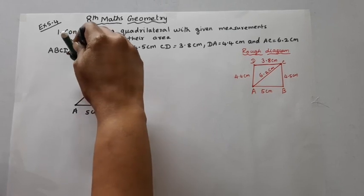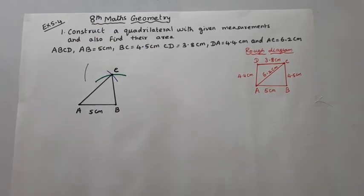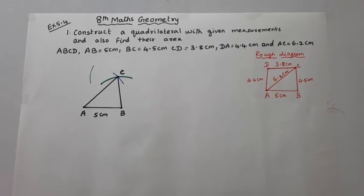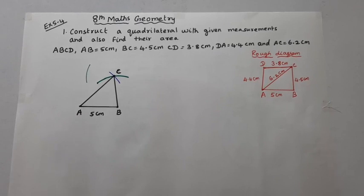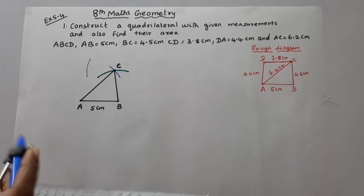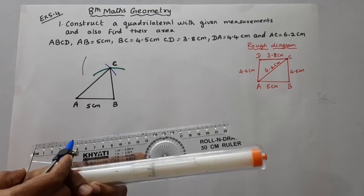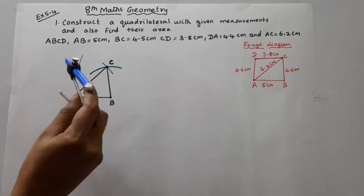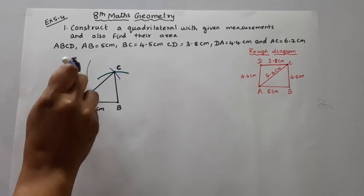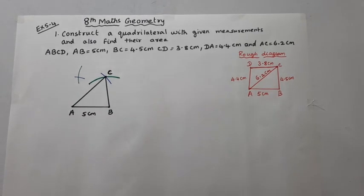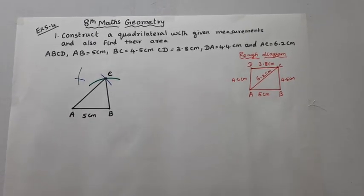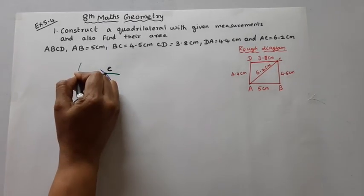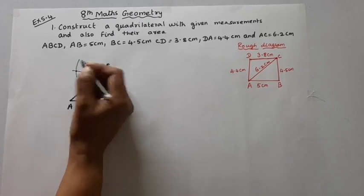CD = 3.8 cm. Using the intercept point method, locate D such that CD = 3.8 cm and DA = 4.4 cm. Mark point D at the intersection. Now we have the quadrilateral ABCD with all four vertices placed correctly.